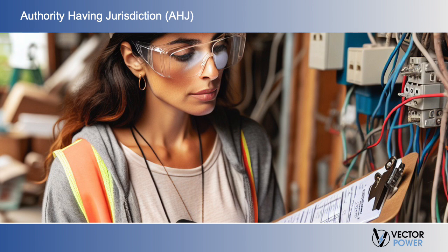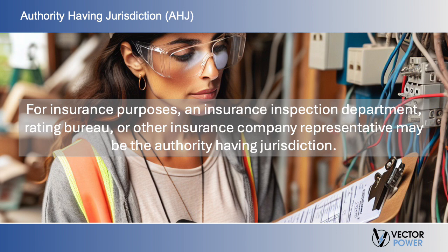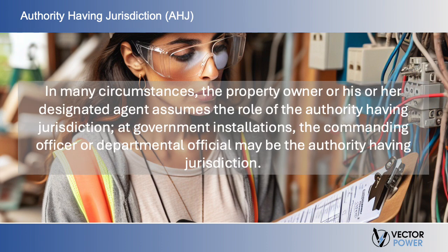It should be noted that the phrase authority having jurisdiction, or AHJ, is used in NFPA standards in a broad manner because jurisdictions and approval agencies vary, as do their responsibilities, where public safety is primary. The authority having jurisdiction may be a federal, state, local, or other regional department or individual such as a fire chief, fire marshal, chief of a fire prevention bureau, labor department or health department building official, electrical inspector, or others having statutory authority. For insurance purposes, an insurance inspection department, rating bureau, or other insurance company representative may be the authority having jurisdiction. In many circumstances, the property owner or his or her designated agent assumes the role of the authority having jurisdiction. At government installations, the commanding officer or departmental official may be the authority having jurisdiction.